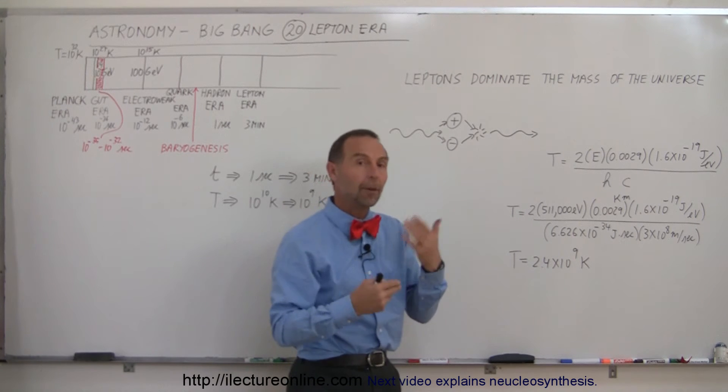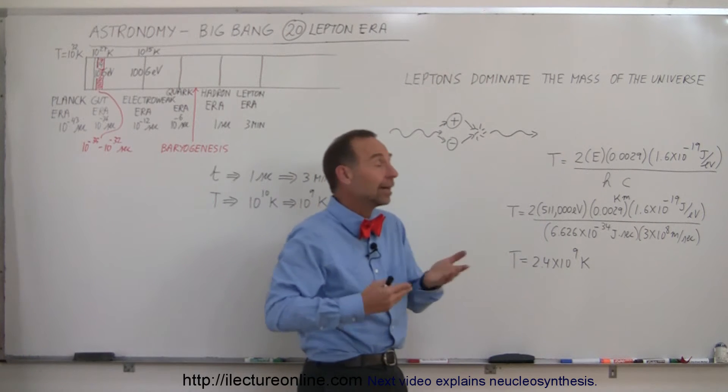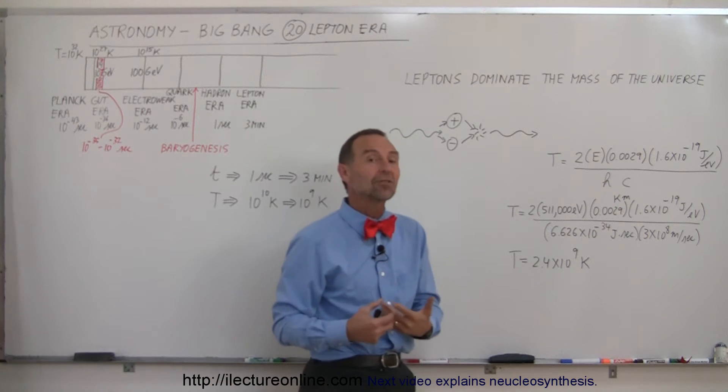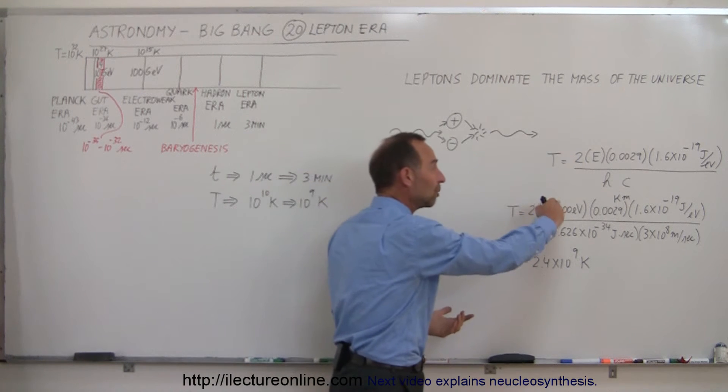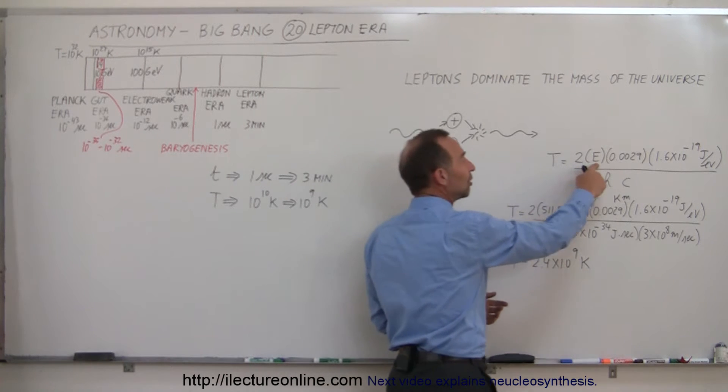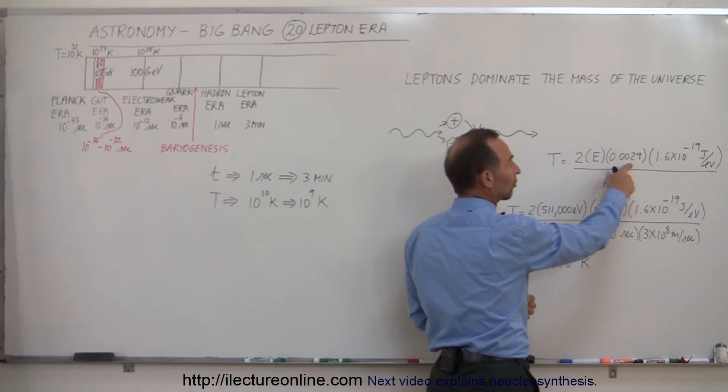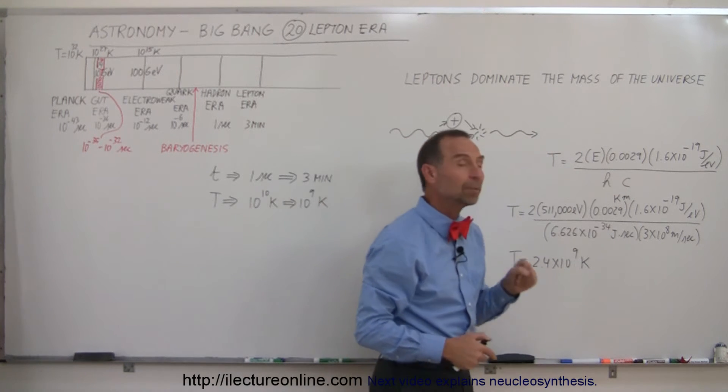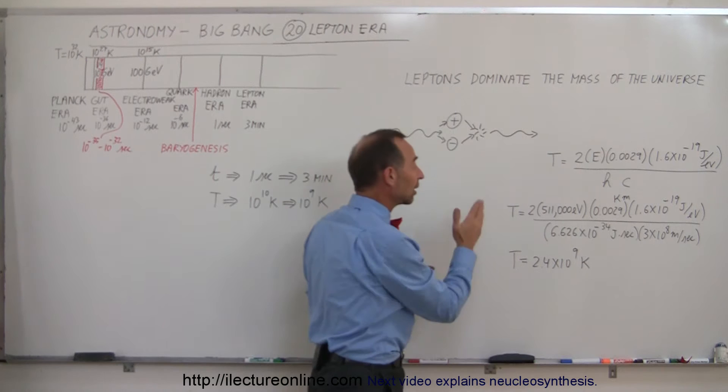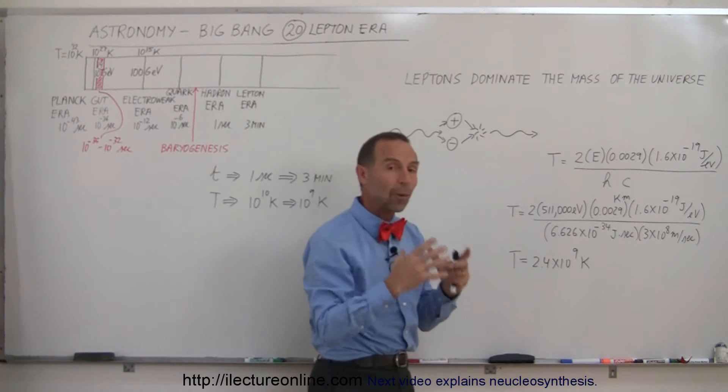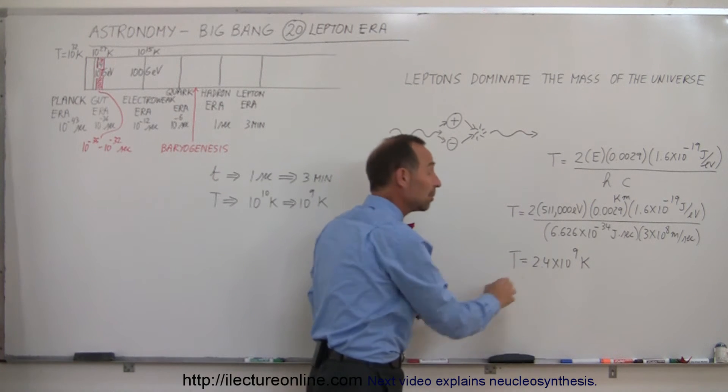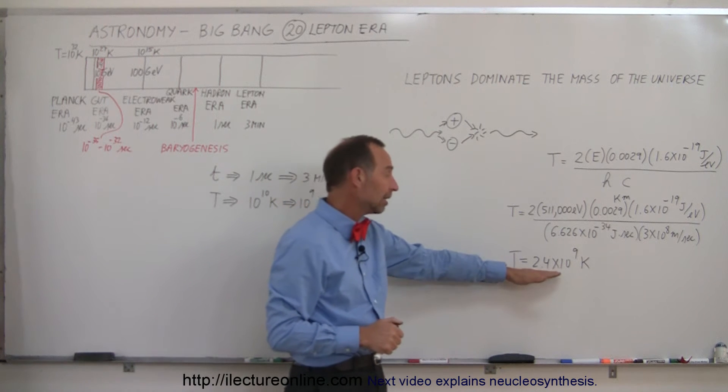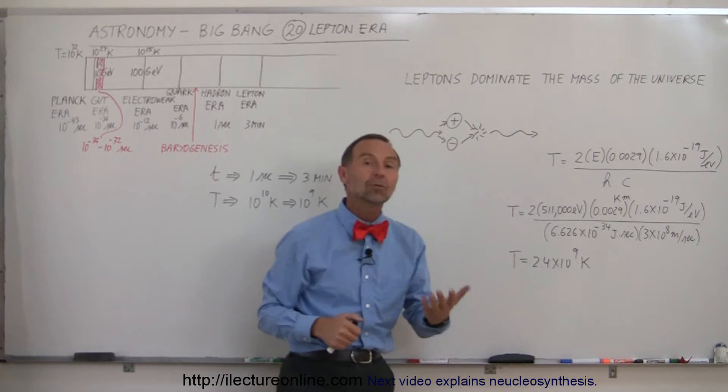Again, we need two particles, a particle and an anti-particle, like an electron and an anti-electron, and to make one electron it takes 511,000 electron volts. So again, using the same equation as before, this is the energy of each particle, this comes from the concept from Wien's law, this is to convert from joules to electron volts, Planck's constant and the speed of light, and we throw it into the equation. We can calculate the temperature required to make these particles, and the minimum temperature required to make an anti-electron pair, you need at least 2.4 billion degrees in temperature.